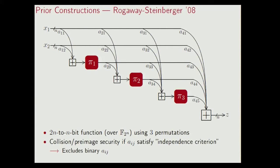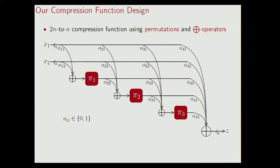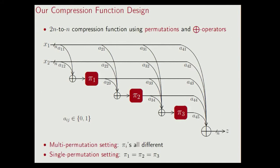And this brings me to our contribution. We essentially look at the set of all two N to one N bit compression functions that are solely based on three permutations and XOR operators. Here the input to pi 1 is, for instance, a11 times x1 XOR a12 times x2, where all the aij's are binary values. We consider this design in two models: the multi-permutation setting, where the three permutations are all different and randomly distributed, and the single permutation setting, where the three permutations are assumed to be the same.